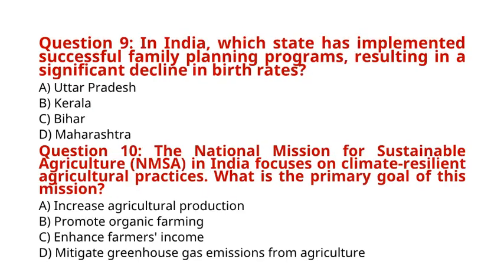Question 9: In India, which state has implemented successful family planning programs, resulting in a significant decline in birth rates? A. Uttar Pradesh. B. Kerala. C. Bihar. D. Maharashtra. The correct answer to Question 9 is option B: Kerala.